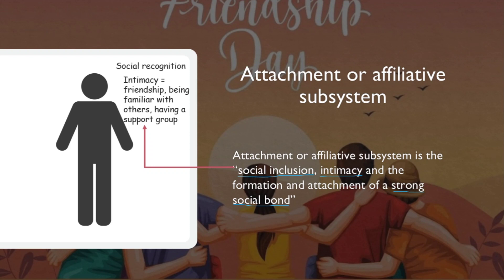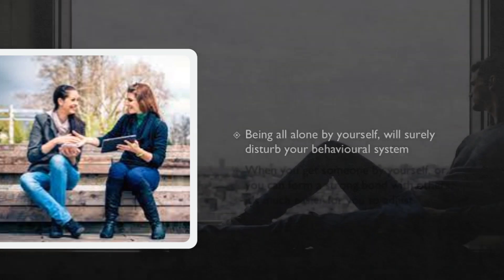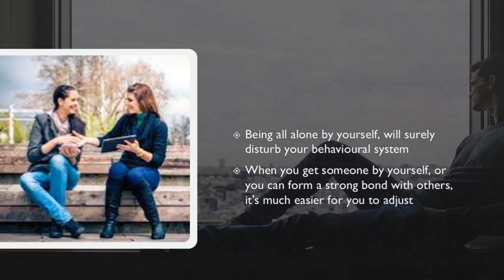For example, when we have someone to support us and know friends in a place, we feel relaxed. But imagine going to a new place all alone with no one recognizing you — that will surely disturb your behavioral system. On the other hand, when you form a strong bond with others, it's much easier to adjust.